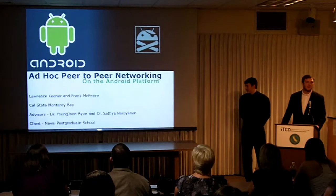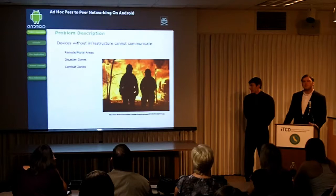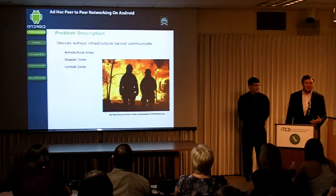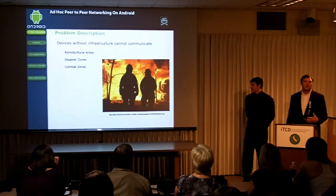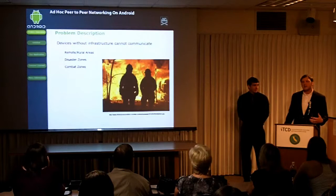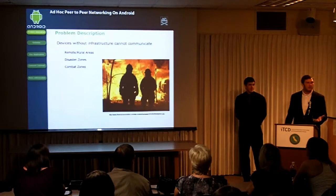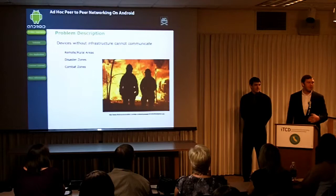The problem that we worked to solve was that mobile devices, software and services on them, rely heavily on pre-existing infrastructure — either Wi-Fi access or cell towers with providers such as AT&T or Sprint. Without this infrastructure in place, most services and applications are unusable. There are a lot of scenarios where this infrastructure either isn't in place or has been degraded, such as remote or rural areas, disasters, or combat zones where it may be destroyed or degraded to the point of being unusable.